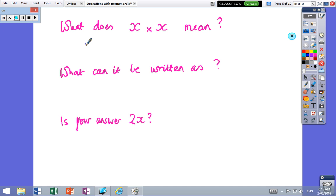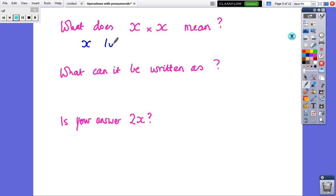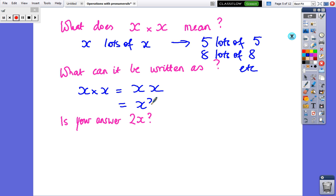So x times x, x lots of x, and 3 sticks. 5 lots of 5, 8 lots of 8, etcetera. Now, x times x could be written as xx. What we do is make this shortcut of x squared.